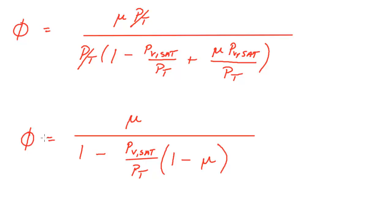This is the form that you'll often see it in. And so now we have a relation for calculating relative humidity based on degree of saturation and partial pressure of vapor which we've already calculated previously along with the total pressure that's been measured.